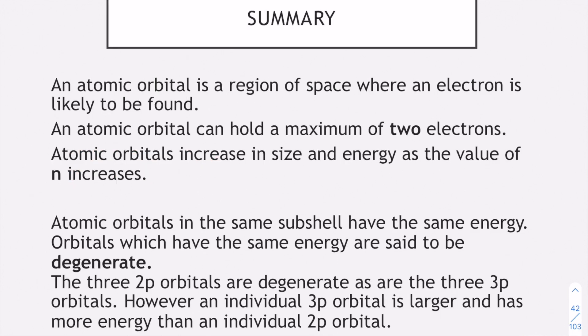Here's a summary of what we've got so far. Your atomic orbital is basically a region in space where your electron is going to be found. A really important thing here is your atomic orbital can hold two electrons. So maximum of two, that's an s, a p, a d or an f, they can only hold two. The atomic orbital increases in size and energy as the value of n increases. Remember I showed you the 1s, 2s and 3s subshell being slightly different in size.